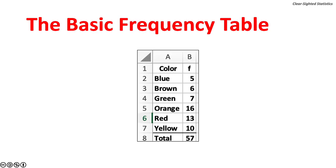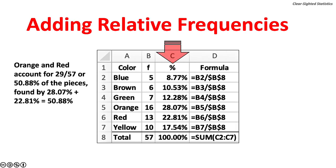Here is our frequency table. It has two columns. Column A lists the six colors; column B shows the counts for each. Cell B8 shows the total of 57 pieces of candy. From this table, we can quickly see there are fewer blue M&Ms than any other color. We can also add a relative frequency column. Relative frequencies are the proportion of the total number. The relative frequency for red is 22.81%, found by 13 red M&Ms over 57 pieces. Orange and red account for 29 over 57, or 50.88% of the pieces.